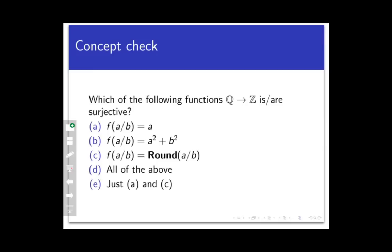So now let's end off with a concept check here. Here are three functions that map the rational numbers into the integers. Remember, a rational number is just a number that can be written of the form a divided by b, where a and b are integers and b is non-zero. So which of the following are surjective? Take a look closely at these functions and pause the video, make your selection, and hit play again when you're ready.